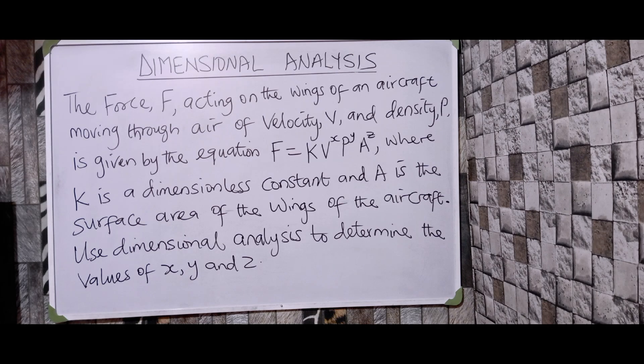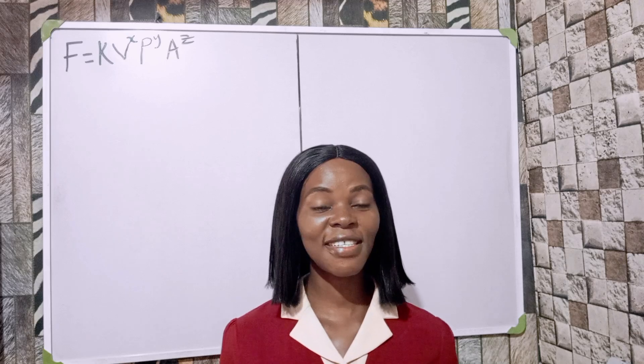Dimensional analysis — let's look at this question on the board. The force F acting on the wing of an aircraft moving through air of velocity v and density p is given by the equation F equals k times v raised to power x, p raised to power y, and a raised to power z. K is a dimensionless constant and a is the surface area of the wings of the aircraft. Use dimensional analysis to determine the values of x, y, and z.